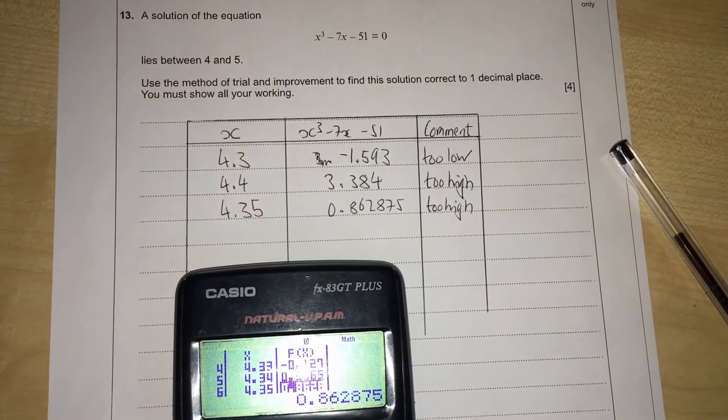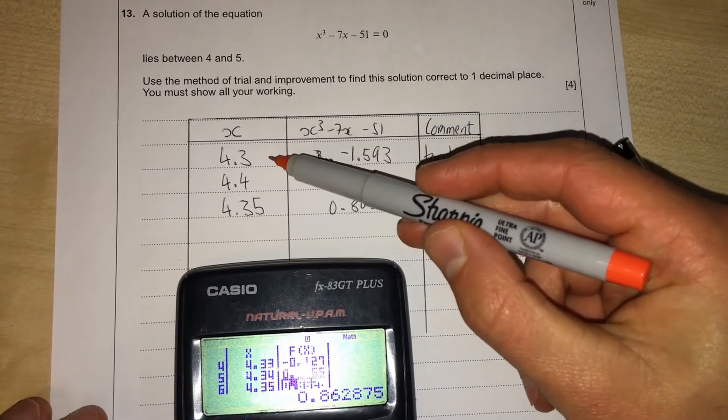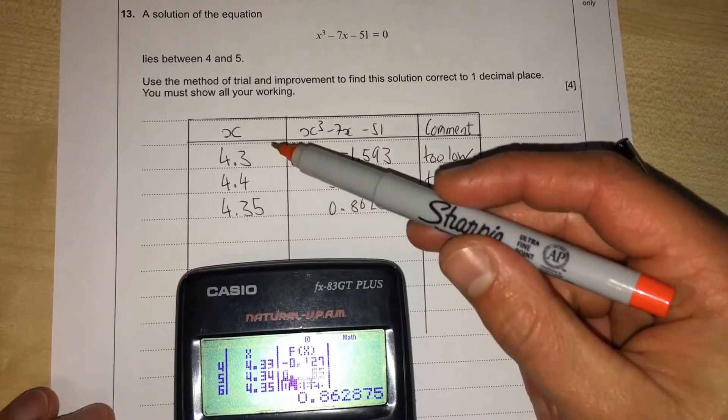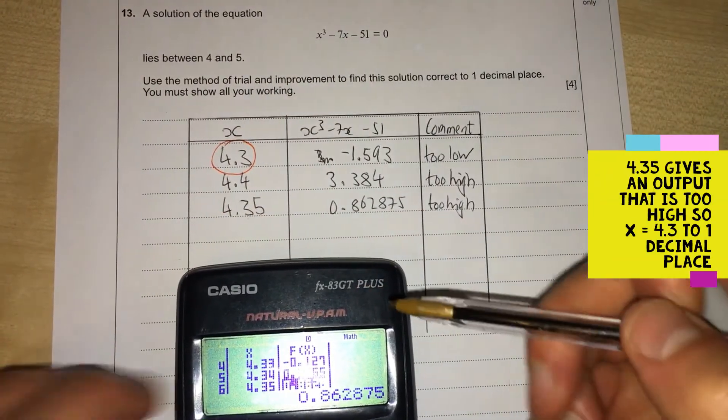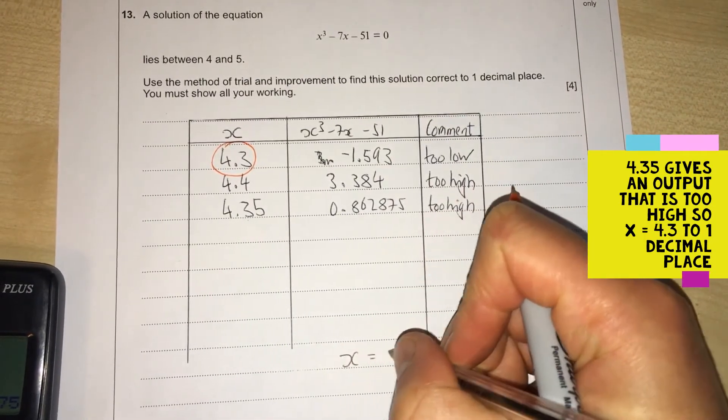What this means is that our answer to one decimal place is closer to 4.3. If 4.35 is too high, we go to 4.3. I'm going to circle that there.